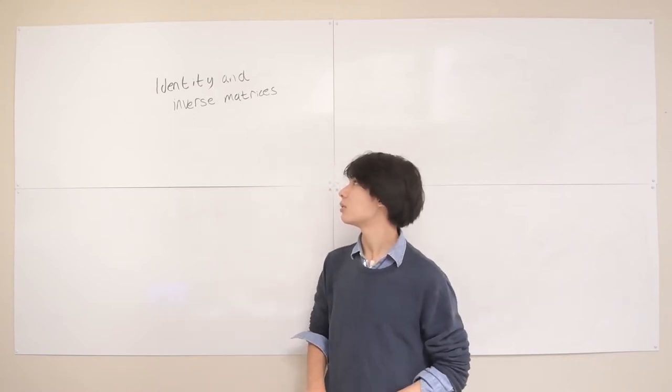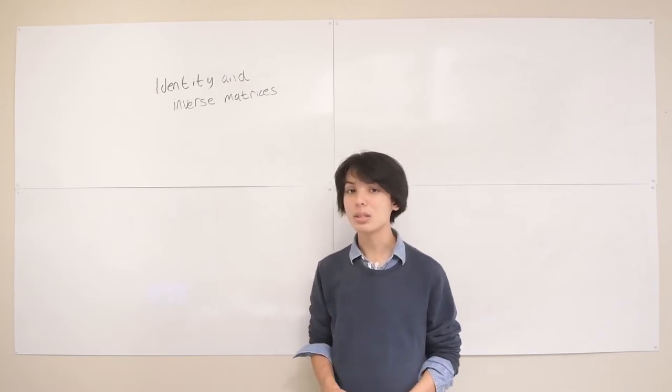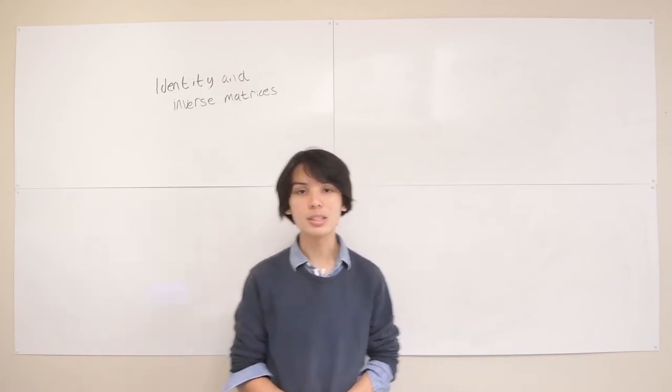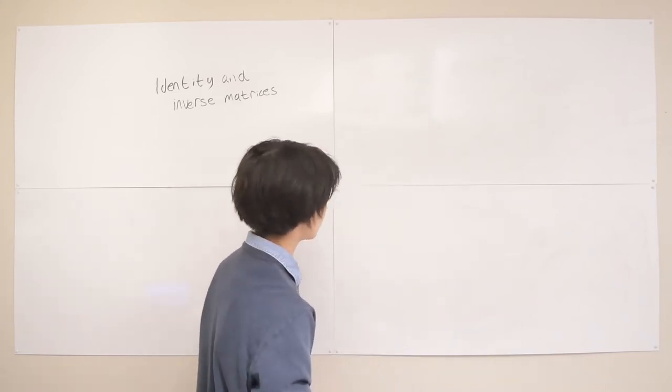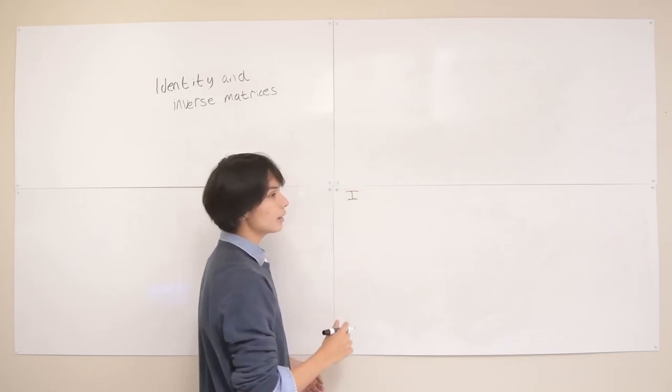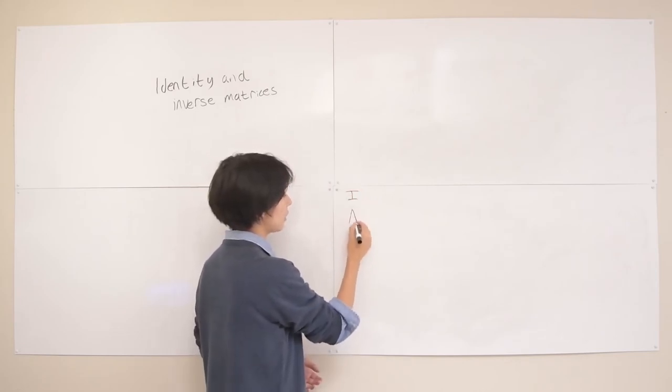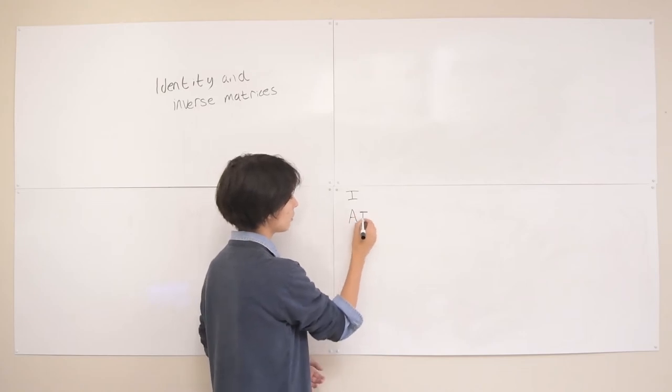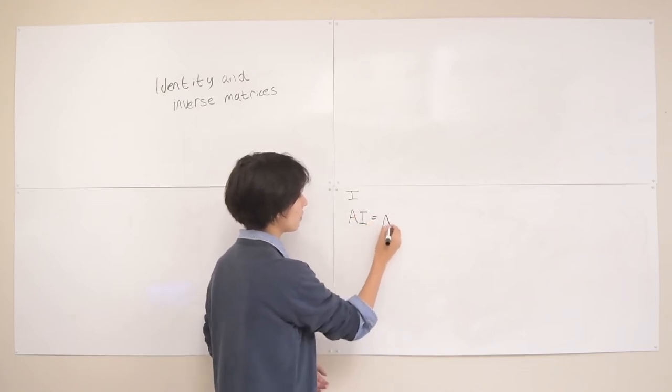To understand inverse matrices, we've got to understand identity matrices first, and luckily that's a pretty easy concept to understand. If we represent the identity matrix with an uppercase I, we have it so that if we have any matrix A and you multiply it by the identity, we just get A back.